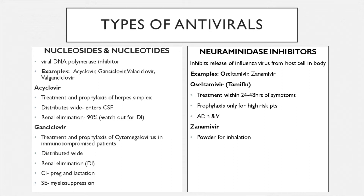Examples of nucleosides are anything ending in '-clovir': acyclovir, ganciclovir, valaciclovir, and famciclovir. The most common one is acyclovir, used in the treatment and prophylaxis of herpes simplex. Please note it distributes widely — most dangerously it enters your cerebrospinal fluid, which can cause issues like meningitis. It is also excreted by your kidneys, so be aware of drug interactions with other renally excreted drugs that could cause renal damage.